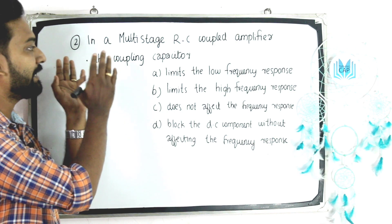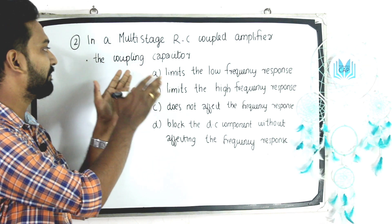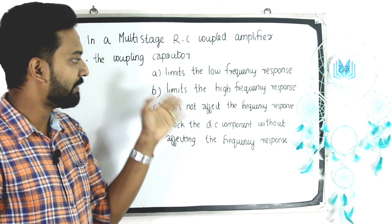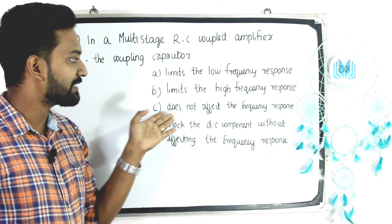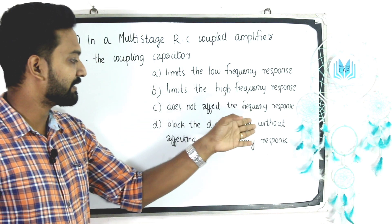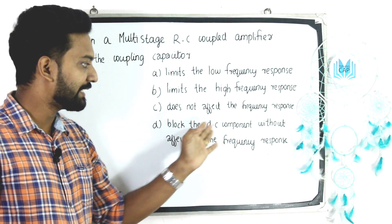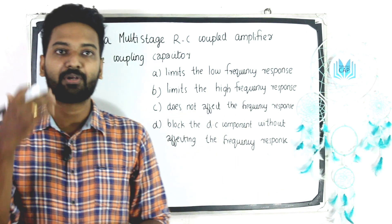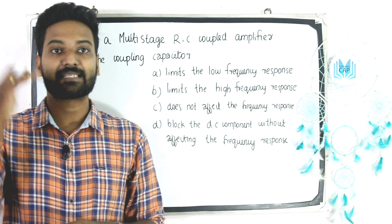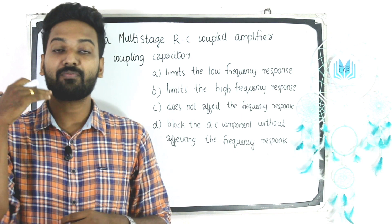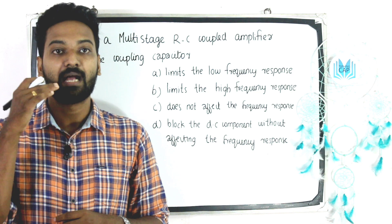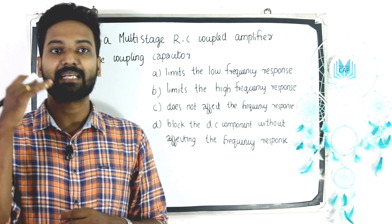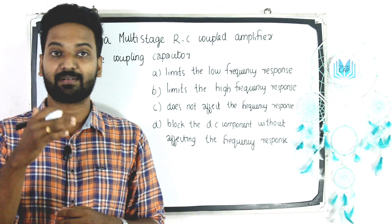Question 2: In a multi-stage RC coupled amplifier, the coupling capacitor — option A: limits the low frequency response; option B: limits the high frequency response; option C: does not affect the frequency response; option D: blocks the DC component without affecting the frequency response. Coupling capacitance is connected in series with the circuit. At low frequency, its impedance becomes high. Hence, it blocks DC and affects the low frequency response.